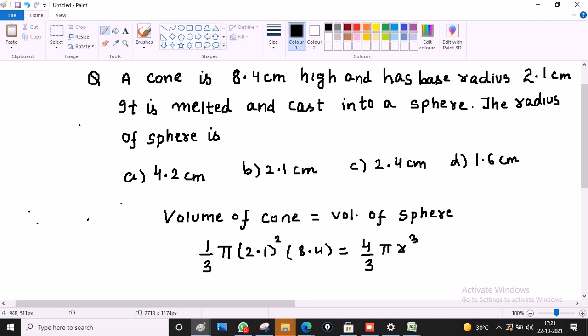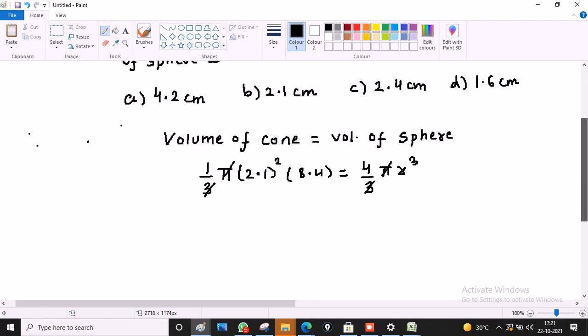So pi by pi cancel, 3 by 3 cancel. 2.1 whole square means 2.1 into 8.4. This is equal to R cube.